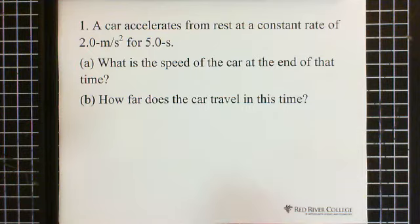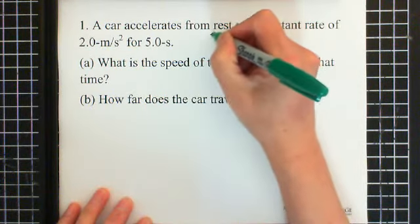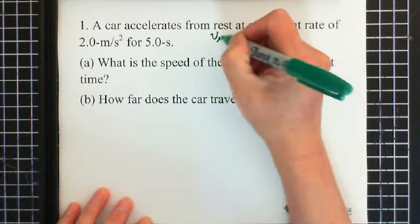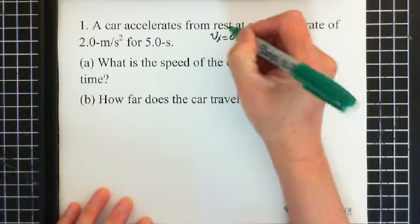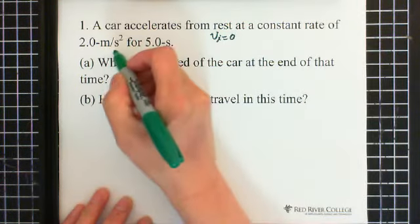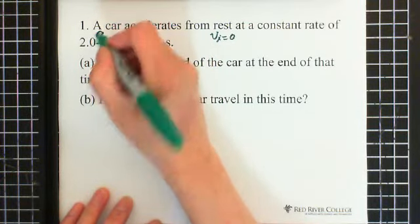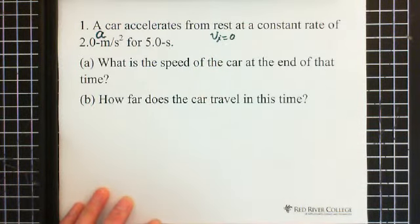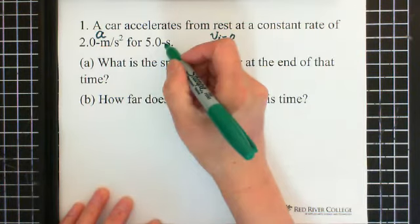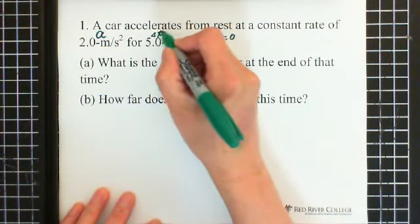From the information we can see the car accelerates from rest — that means the initial velocity equals zero. The constant rate of 2 meters per second squared is the acceleration, and 5 seconds is the time period delta t.